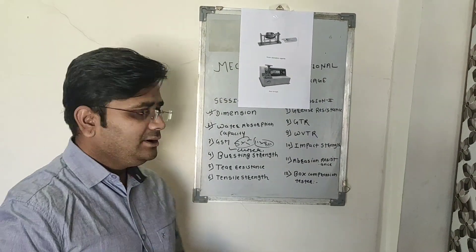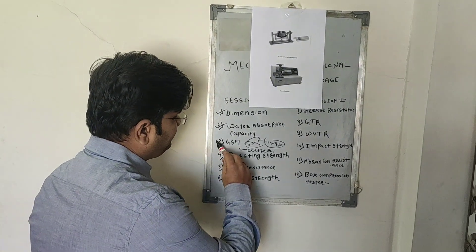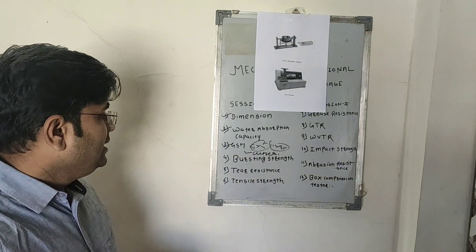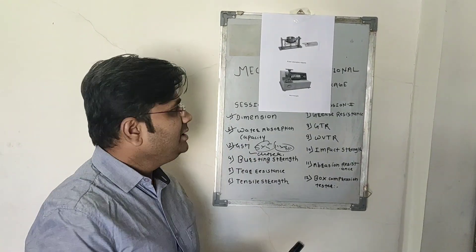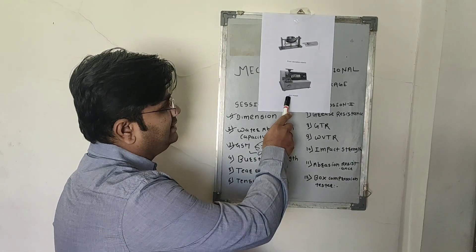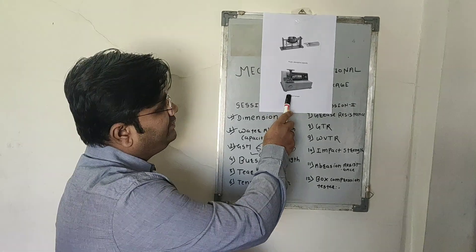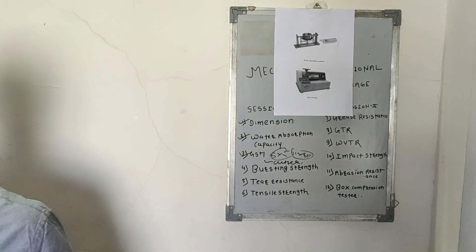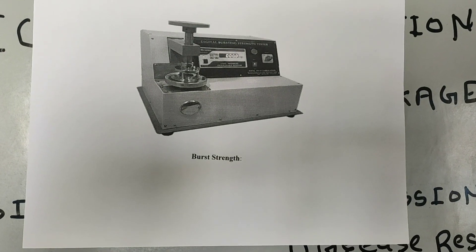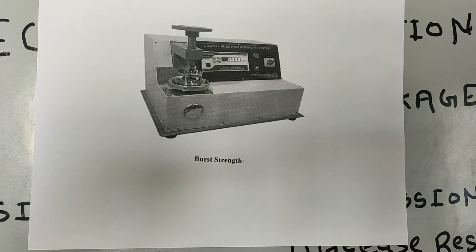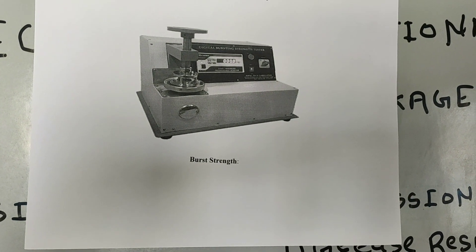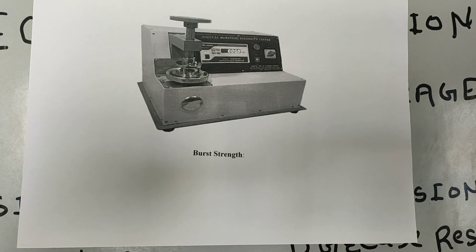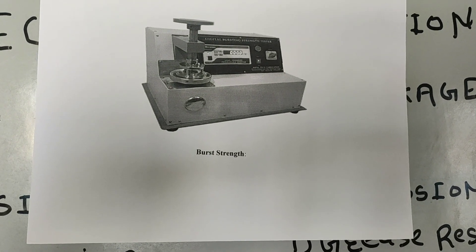That is how you calculate the GSM of a given packaging material. The next property is bursting strength. Bursting strength is the test that measures the ability of paper or paperboards to withstand pneumatic or hydraulic pressure.